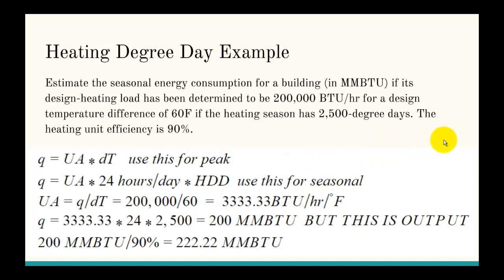Let's look at the heating degree day example. This example is to estimate the seasonal energy consumption for a building in MMBTUs if its design heating load has been determined to be 200,000 BTUs per hour for a design temperature difference of 60 degrees Fahrenheit. The heating season has 2,500 degree days, and the heating unit efficiency is 90%.